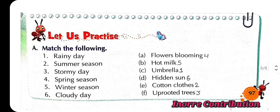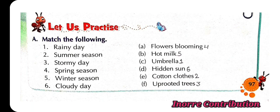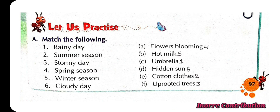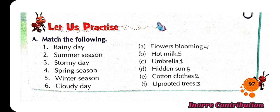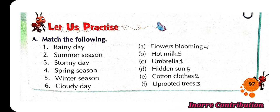Let's practice. Match the following. 1st: Rainy day — umbrella. 2nd: Summer season — cotton clothes. 3rd: Stormy day — uprooted trees. 4th: Spring season — flowers blooming. 5th: Winter season — hot milk. 6th: Cloudy days — hidden sun.